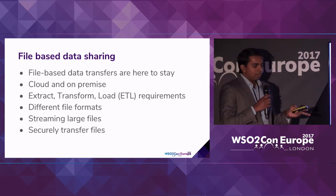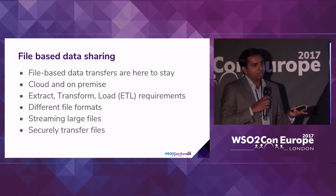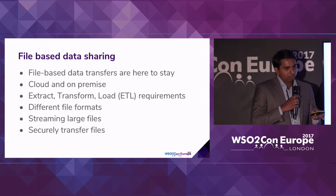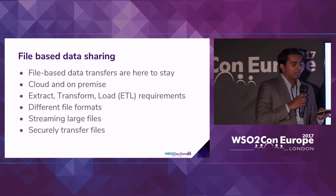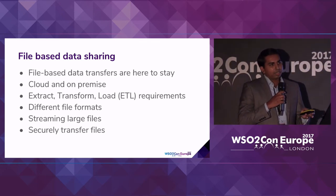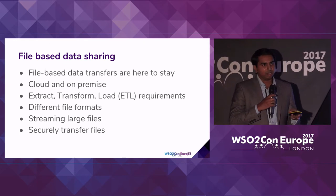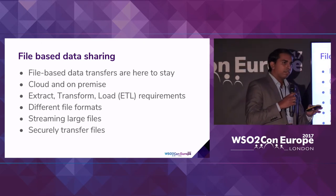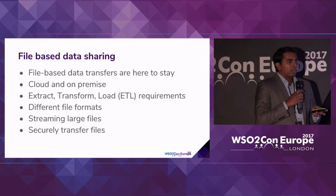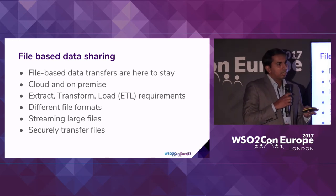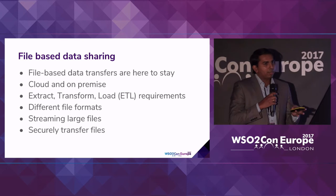During the initial phases we identified that file-based data sharing is not gone. Even though we have all sorts of different cloud-based file sharing systems, we have seen that people are intensively using on-premise file storages. So we thought about addressing that problem in a different manner by providing an API to integrate with cloud-based file sharing systems as well as on-premise file-based solutions. That is one of the reasons why we came up with a new Ballerina IO API which will abstract the capabilities of file-based data transfers.